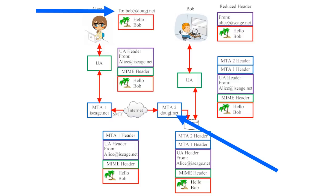It turns out that everything following the '@' in an email address is the name of a specific Message Transfer Agent somewhere on the internet. So in a non-technical sense, the email system asks Alice, 'Which Message Transfer Agent do you want me to send this email to?' Alice responds, 'The one for dougj.net.' And then the email system asks, 'Which user at that Message Transfer Agent do you want me to deliver this email to?' And Alice responds, 'Send it to Bob.' The email address tells the computer: send this email to the username Bob at the mail server called dougj.net.